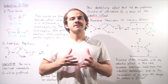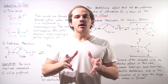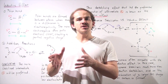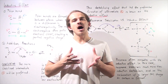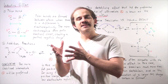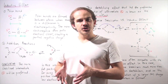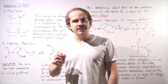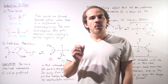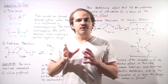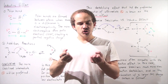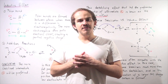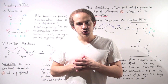Let's continue our discussion on carbocation stability and regioselectivity of addition reactions. Let's recall what a polar bond is. A polar bond is formed between two atoms that have different electronegativity values.